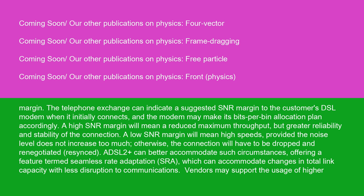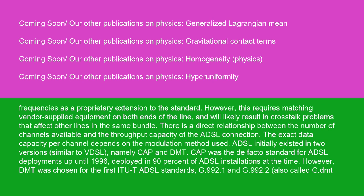The telephone exchange can indicate a suggested SNR margin to the customer's DSL modem when it initially connects, and the modem may make its bits-per-bin allocation plan accordingly. A high SNR margin will mean reduced maximum throughput but greater reliability and stability of the connection. A low SNR margin will mean high speeds provided the noise level does not increase too much — otherwise, the connection will have to be dropped and renegotiated. ADSL2 Plus can better accommodate such circumstances, offering a feature termed seamless rate adaptation, SRA, which can accommodate changes in total link capacity with less disruption to communications. Vendors may support the usage of higher frequencies as a proprietary extension to the standard; however, this requires matching vendor-supplied equipment on both ends and will likely result in crosstalk problems affecting other lines in the same bundle.